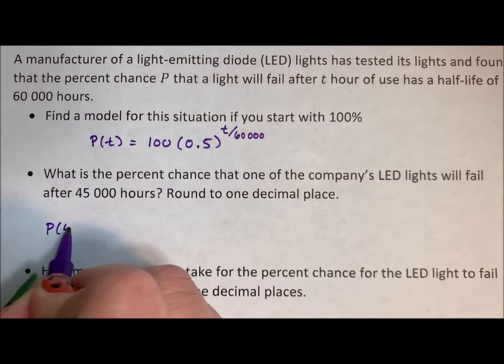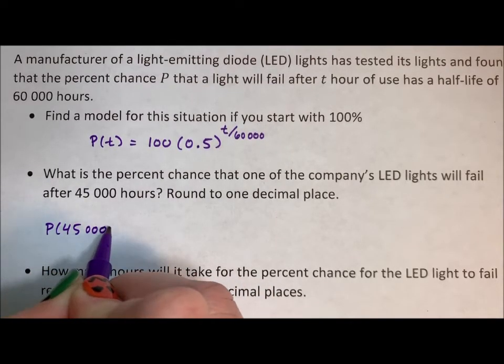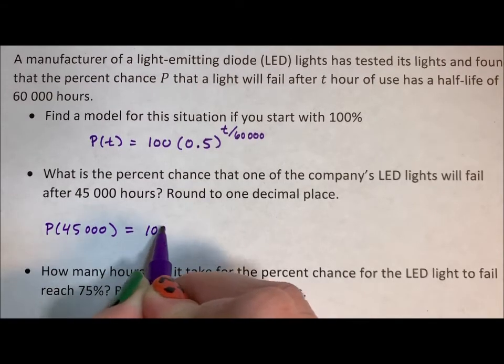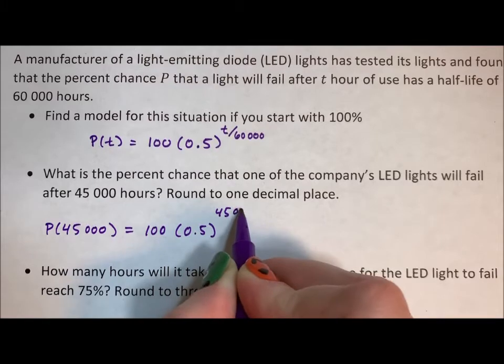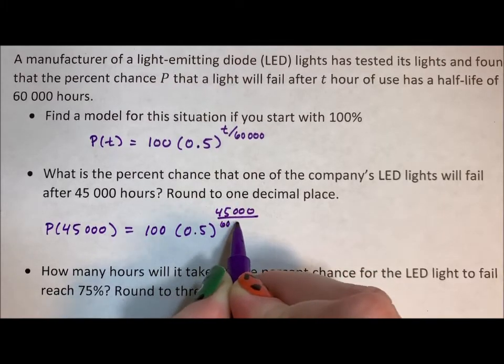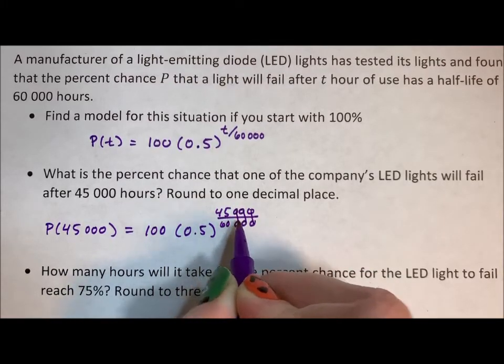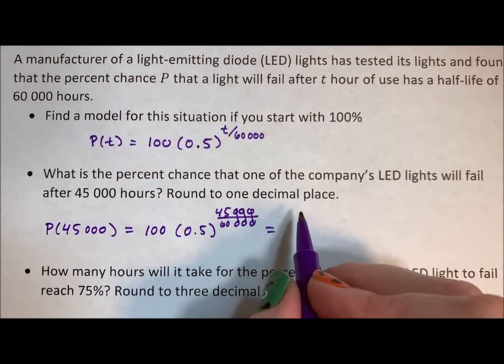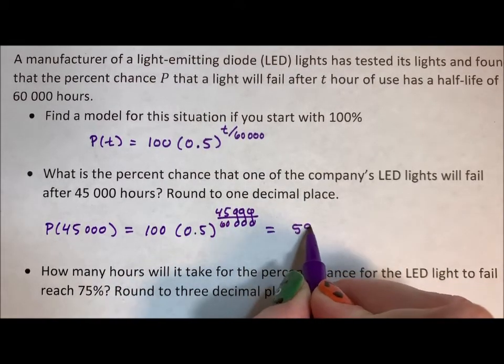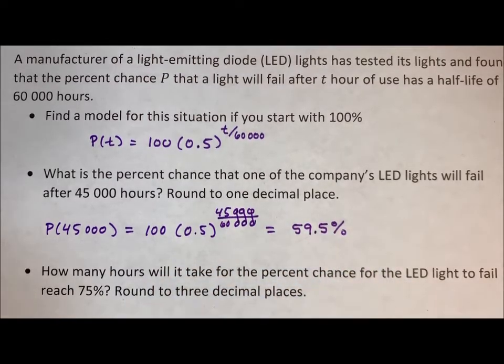So P(45,000) equals 100 times 0.5 to the 45,000 divided by 60,000. Get rid of the extra zeros. This is going to equal 59.5%.